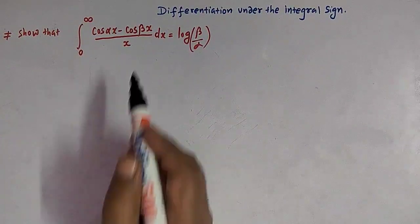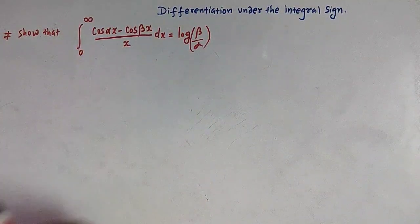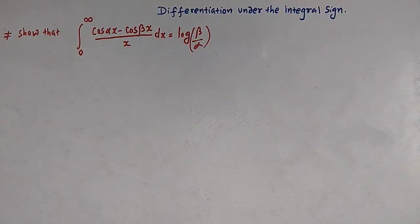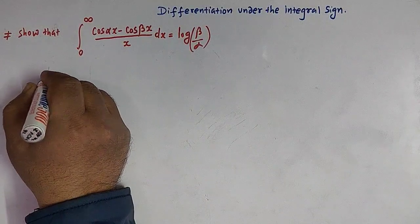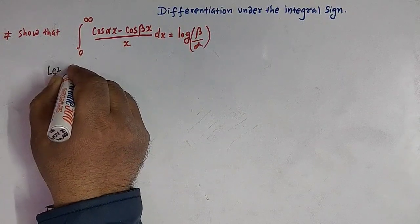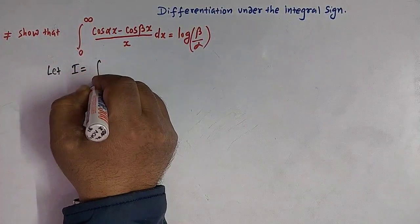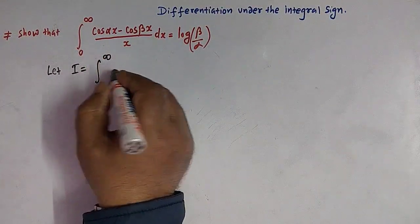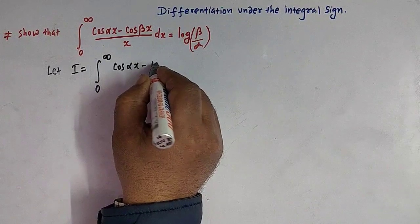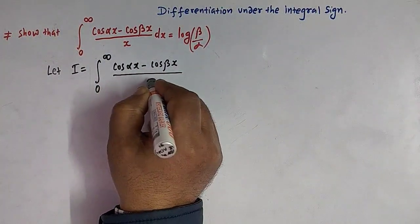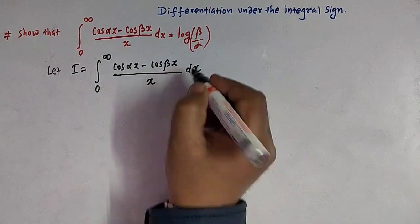We will solve this integral with the help of the concept of differentiating an integral with respect to some variable. So let us start and let us first take this integral as I. So we have I is equal to the integral from 0 to infinity of (cos αx - cos βx) divided by x.